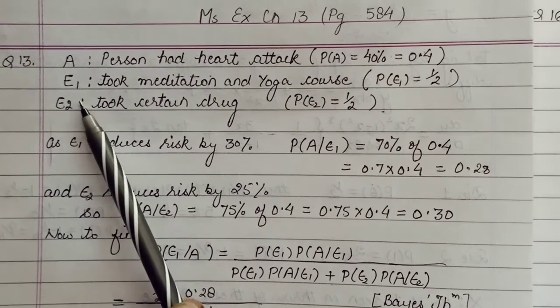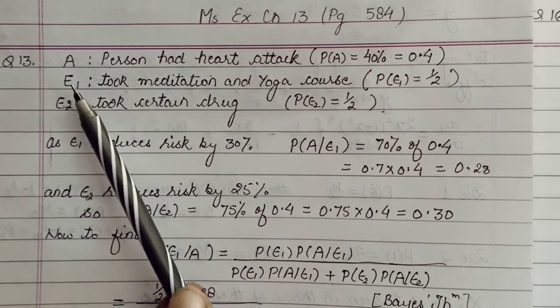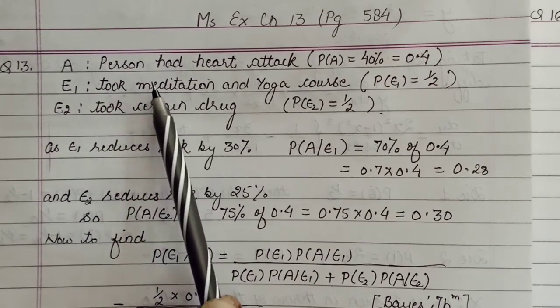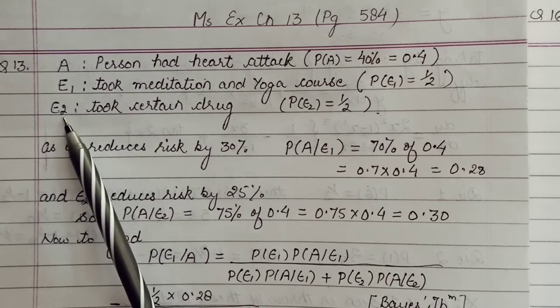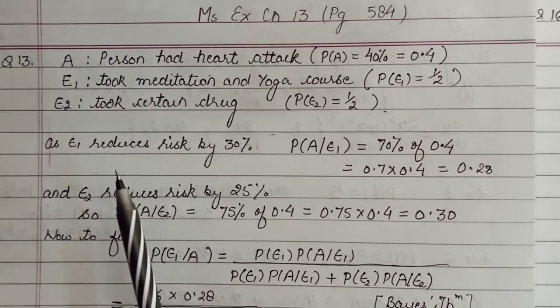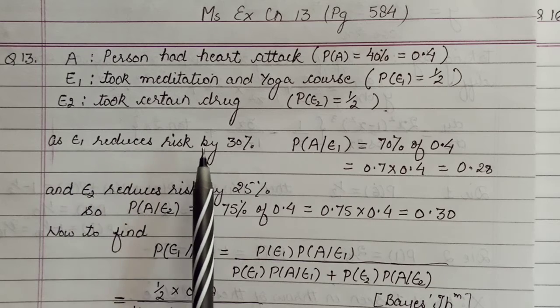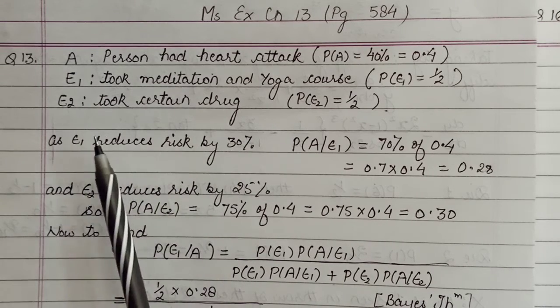So these will become our basic events partitioning. Either you can go for meditation or you can go for drug, so these two options will become your events E1 and E2.